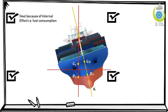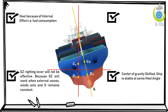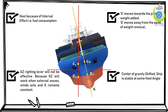Let's talk about some important points. First, the heel is caused by an internal effect, i.e., fuel consumption. Second, the center of gravity shifts and the ship is stable at some heel angle. Third, GZ is the righting lever, but GZ will not be effective here — GZ works when external waves or winds act and G remains constant, but here G is not constant because G has shifted towards the starboard side. Fourth, as a common sense point, G moves towards the point where weight is added, while G moves away from the point of fuel removal.